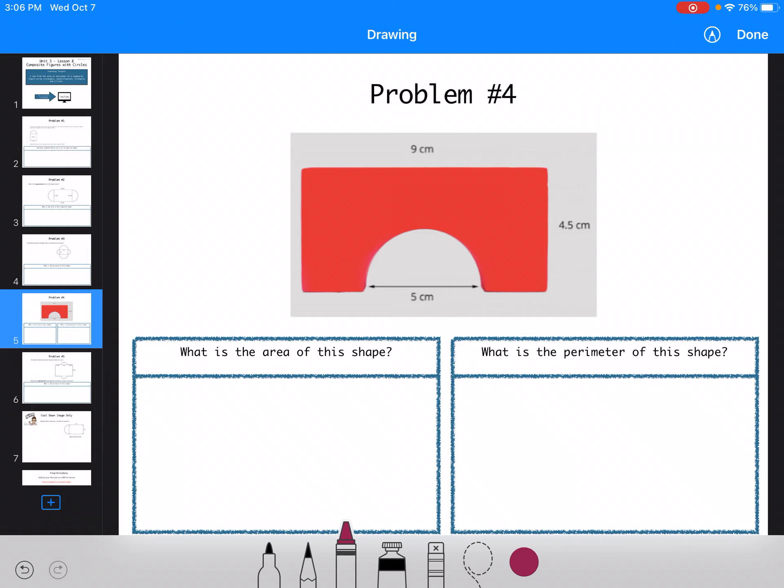The next one says what is the area of this shape. So I have a rectangle. And then I'm missing a semicircle. So I'm going to find the area of the rectangle first. So I'm going to do 9 times 4.5. And I get 40.5.